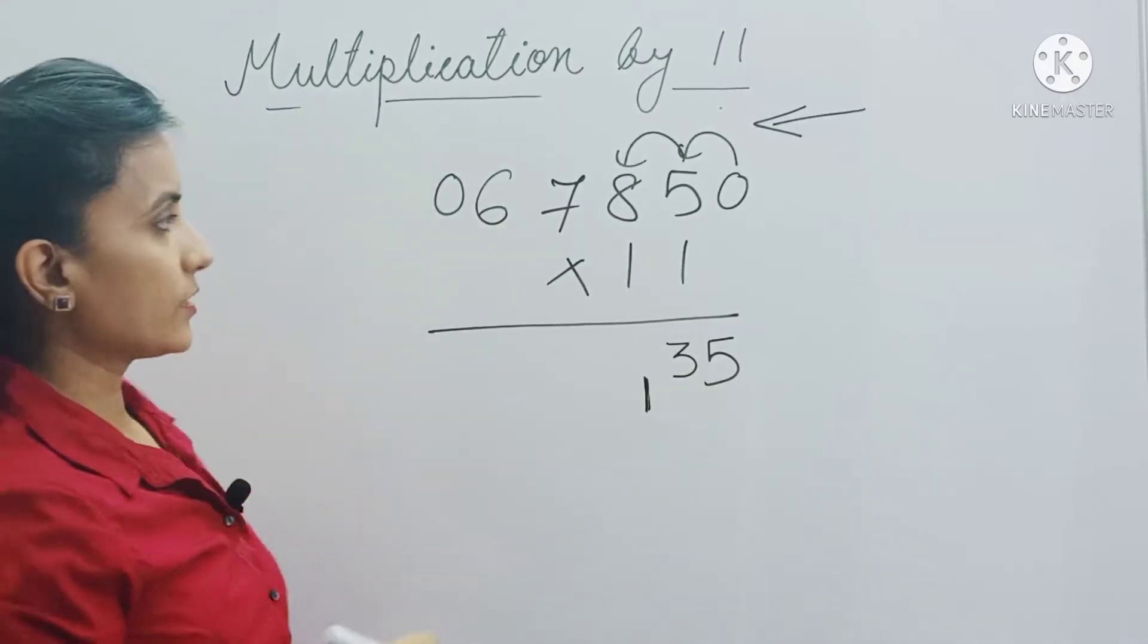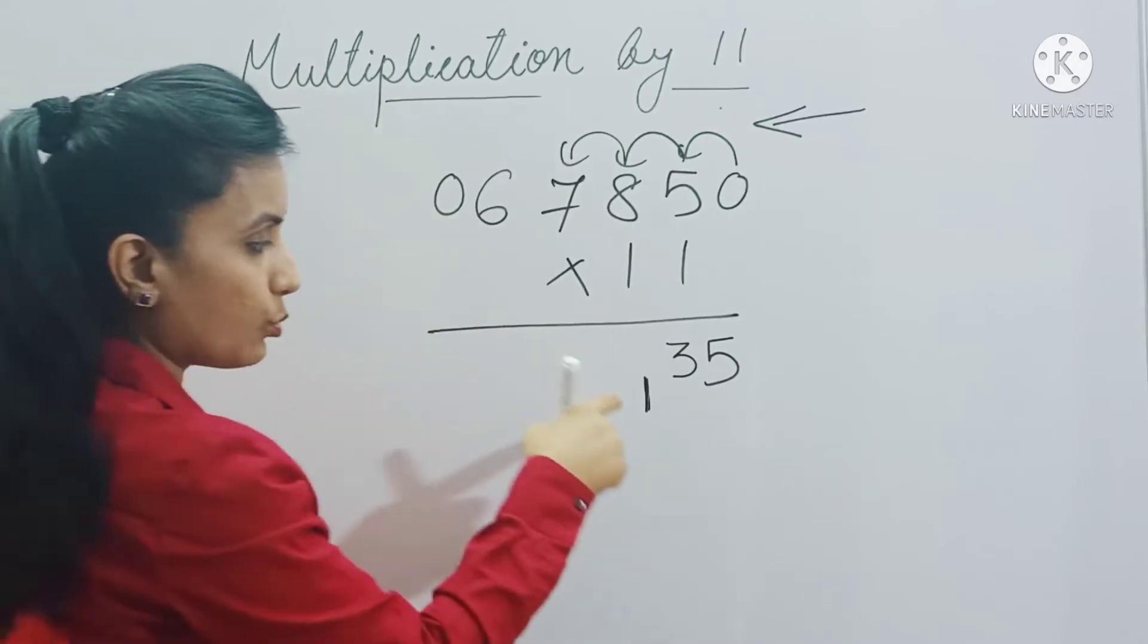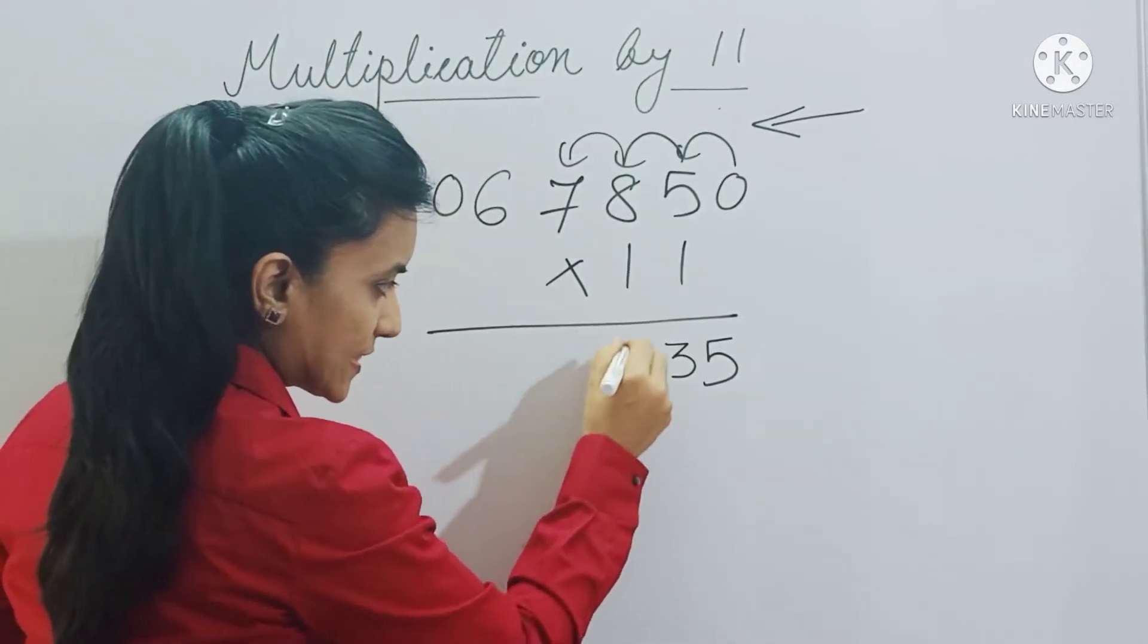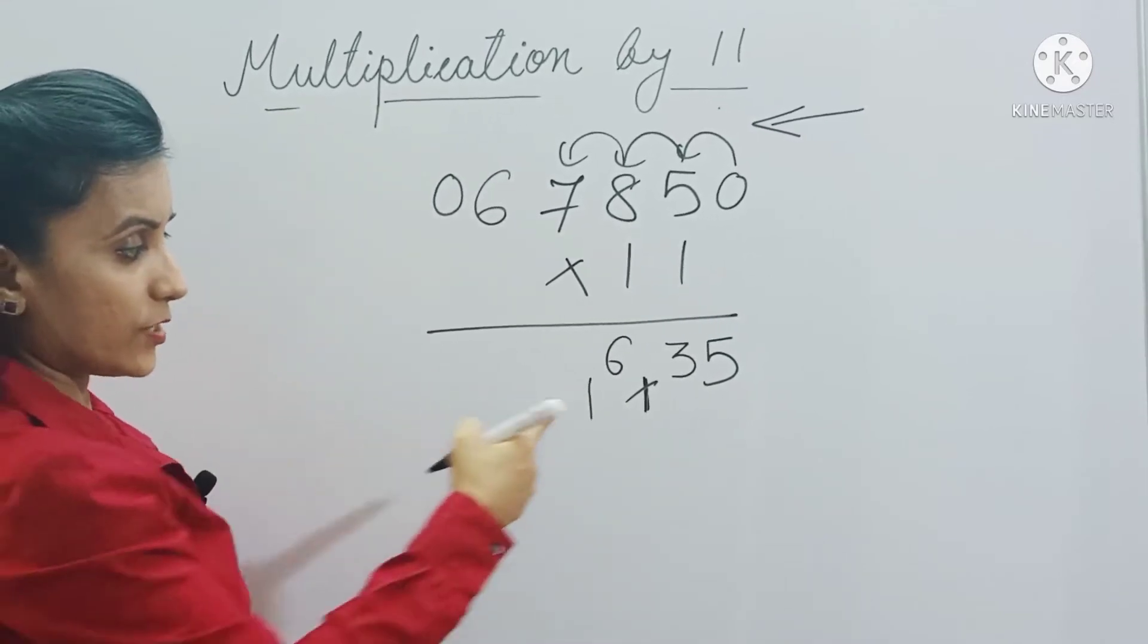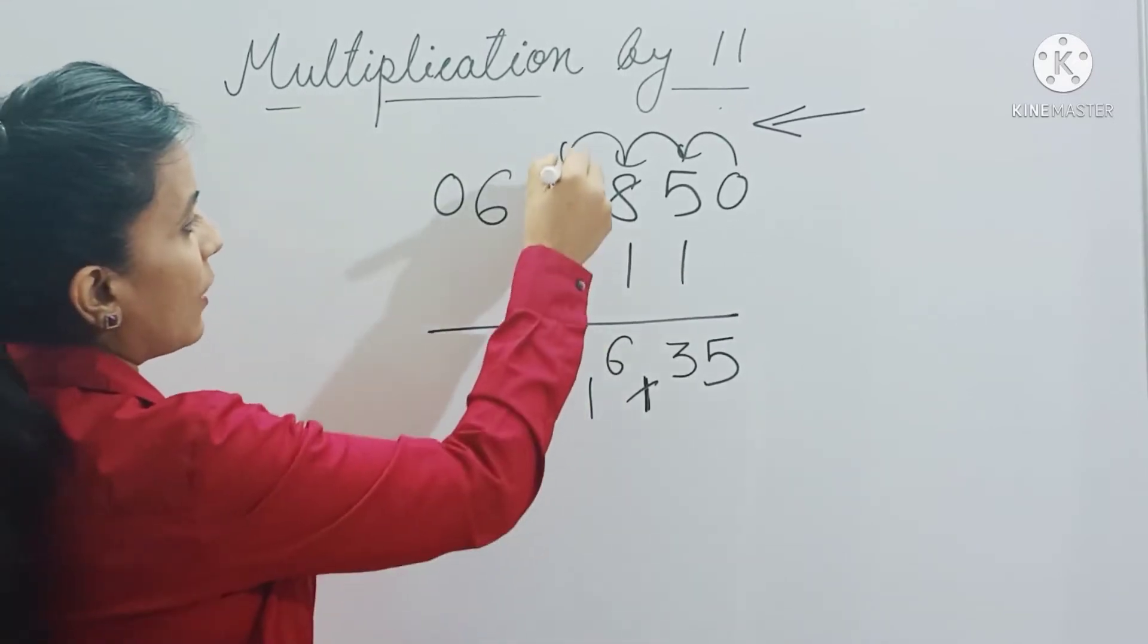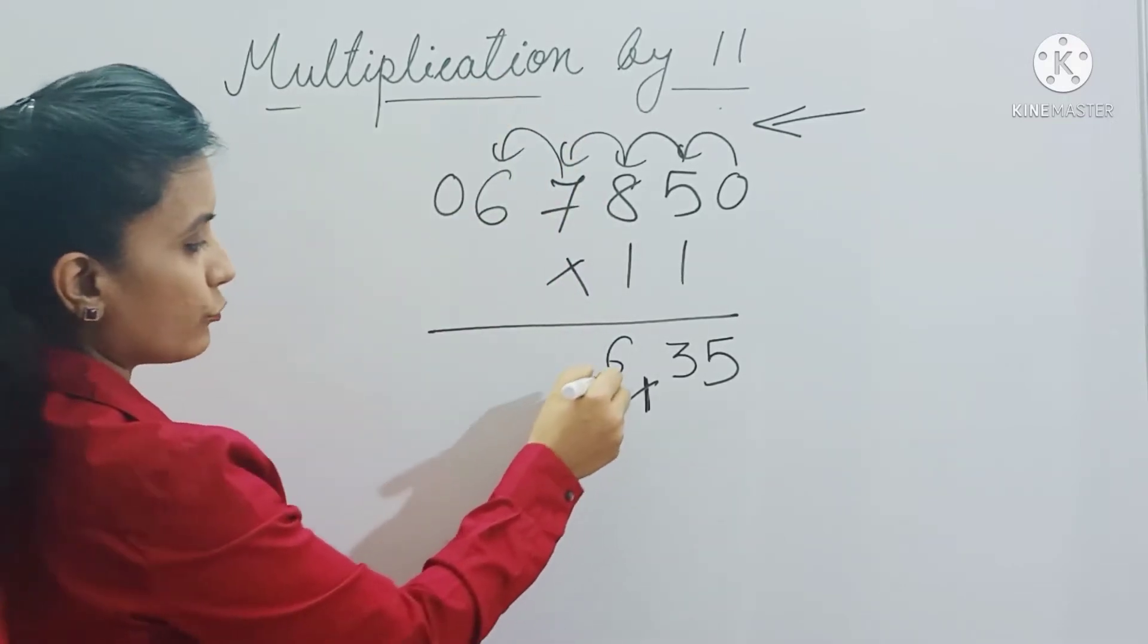Now 8 plus 7 is 15. Now 15 plus 1 will be 16, and you strike this so that you can remember that yes, you have added this to the next sum. Now 6 plus 7 is 13, 13 plus 1 is 14.